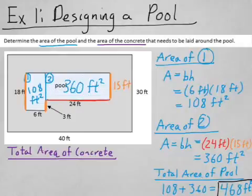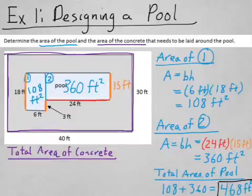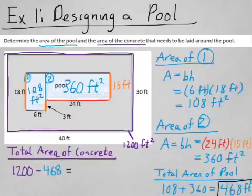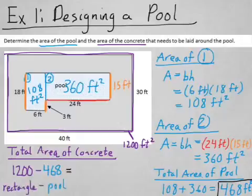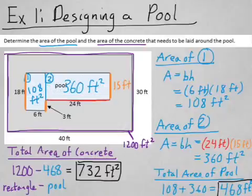We have this entire giant rectangle that will be made of concrete except for the pool. If I do 40 feet times 30 feet, that would give me 1200 square feet. So I know that's the total area of the rectangle, but I'm going to need to subtract off the area of the pool, because we're not going to lay concrete in the pool. So we're doing the rectangle minus the area of the pool to get the area just that's around the edge of the pool. So that would be 732 square feet.